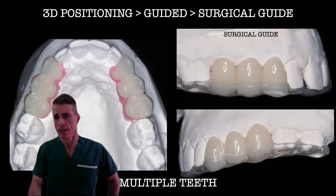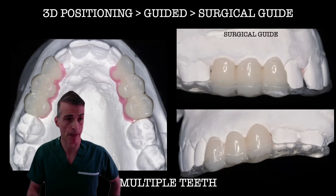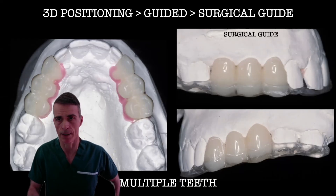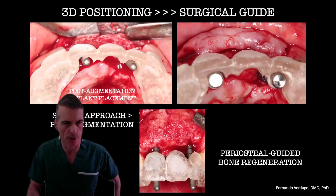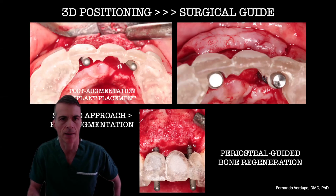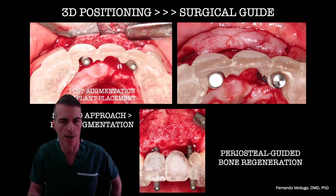When you are placing multiple implants, I highly advise doing a surgical guide — you should do it guided. Your surgical guide should be based on your wax-up. The surgical guide is not only going to be used at the time of implant placement, but also previously at the time of augmentation.